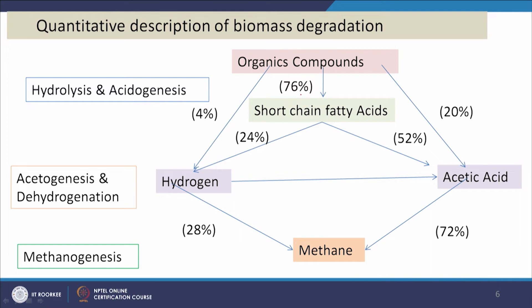Considering the relative contributions: from 100% organic compounds, 76% is converted to short-chain fatty acids, 20% to acetic acid, and 4% to hydrogen. Of the 76% short-chain fatty acids, 52% is converted to acetic acid and 24% to hydrogen. From these pathways, approximately 72% of methane is produced through the acetic acid route and 28% through the hydrogen route. This step is hydrolysis/acidogenesis, followed by acetogenesis/dehydrogenation, then methanogenesis.